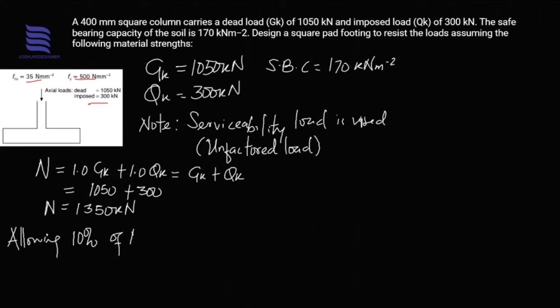Allowing for 10 percent of N for self-weight of the footing, we have 1.1 times the value of N. That gives us 1.1 multiplied by 1350, which equals 1485 kilonewtons. This value is now inclusive of the self-weight of the base.